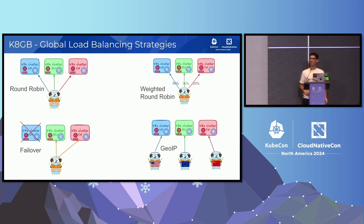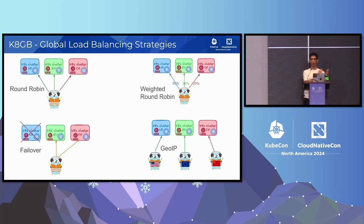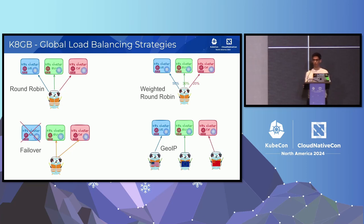Let's go over strategies now. KHEB supports the following strategies: round robin, either with equal weights or different weights per cluster; failover, where users are routed to a primary cluster and if there is an issue with that cluster or the applications running on it, users are failed over to other clusters; and GeoIP, where we route users to clusters according to their location.